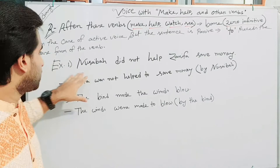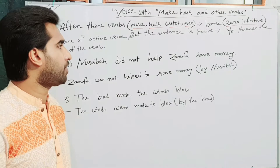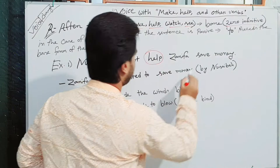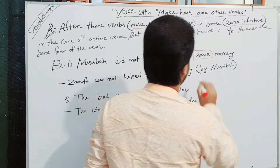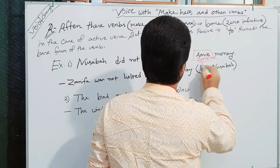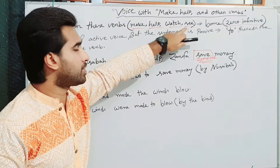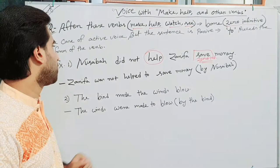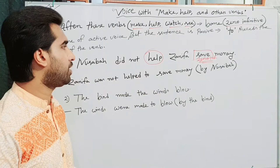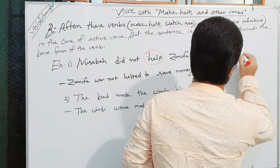Look at this. The first example is: Nusaiba did not help Jarifa save money. Here, 'help' and 'save' are the verbs. After these verbs, zero or bare infinitive is used. Nusaiba did not help Jarifa save money. This is an active voice sentence.